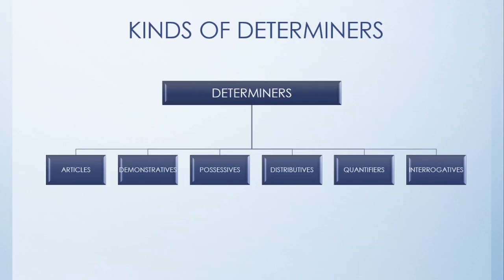Some, any, little, a little, the little, few, a few, the few, etc. are quantifiers. And interrogatives are wh- words — that is, which, what, whose, etc.